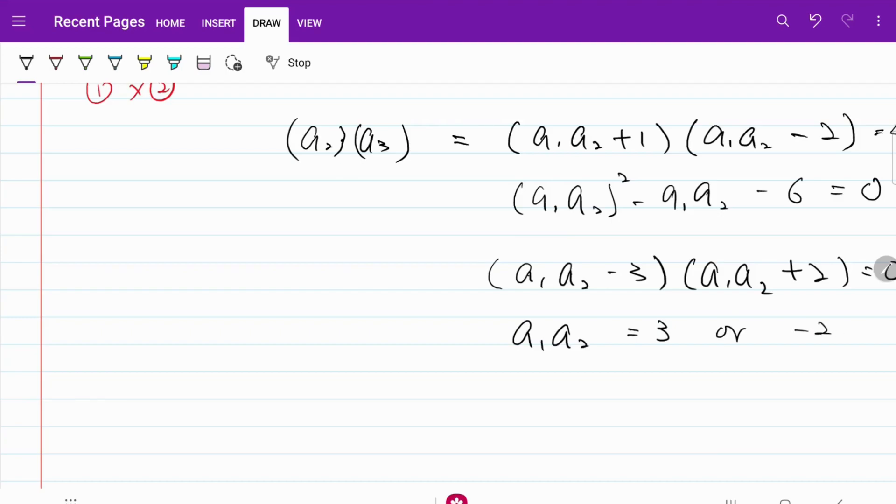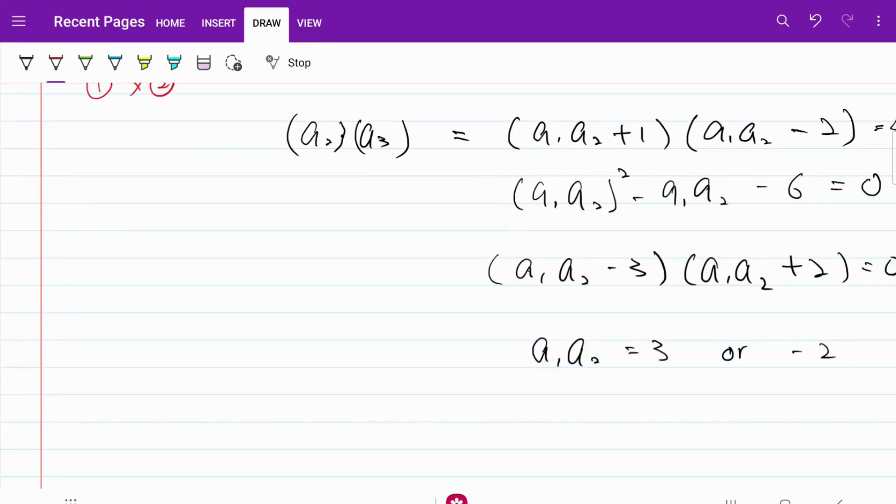Let's do a recap on all the information that we have. A1 is between 0 and 1, and A2 = A1·A2 + 1. In other words, I can rearrange this equation to have A2(1 - A1) = 1. From there, A2 = 1 / (1 - A1).